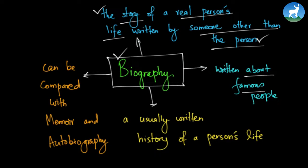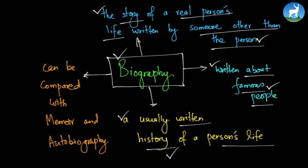So it is written about famous people, people like Abraham Lincoln, Mahatma Gandhi, Ernest Hemingway. We write biographies about these people because they are famous. It is usually a written history of a person's life — from the birth of the person to the death of the person. How was his or her childhood like? What did he or she do while growing up? What different kinds of hardship did he or she encounter in his or her life? So it is usually a written history of a person's life.